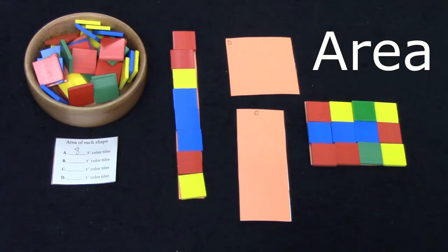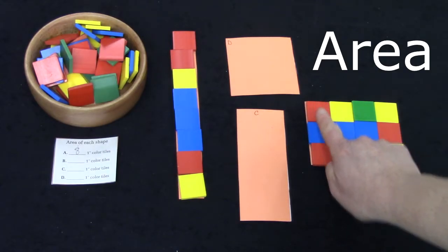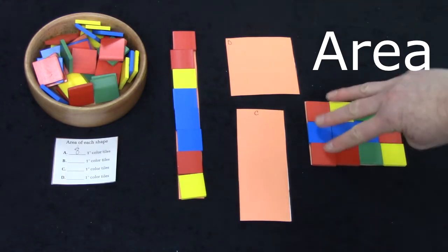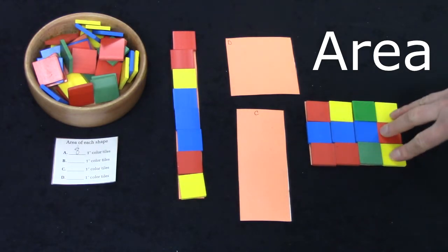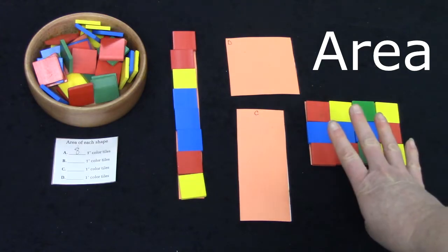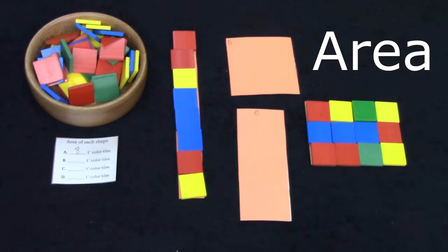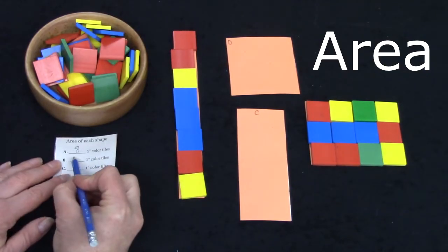This is four groups of three. One, two, three, four groups of three. I could count by threes. Three, six, nine, twelve. Or I could count by fours. Four, eight, twelve. The area of shape B is twelve one inch color tiles.